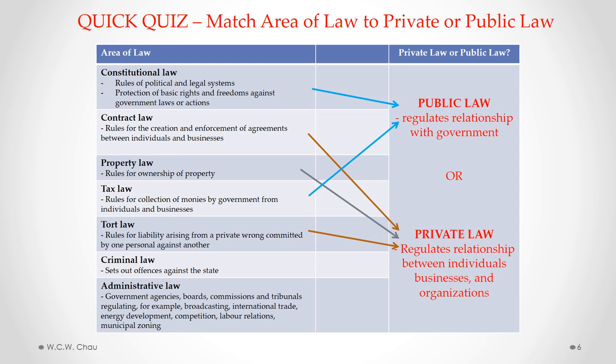Criminal law sets out particular behaviors as offenses against the state — for example, murder, theft, and fraud are all criminal offenses. Criminal law is considered to be public law because every time you commit a criminal offense, it is considered to be an offense against the state. Even though there might be a victim for that crime, strictly speaking from a legal standpoint, the offense is against the state.